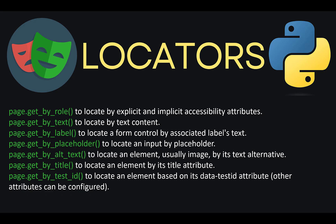Get by role means we can locate the element by its explicit or implicit accessibility attribute — for example, a button. Get by text means we can locate that element by its text content. Get by label means we can locate a form control by its associated label text. Get by placeholder locates an element using a placeholder attribute. Get by alternate text locates images by their alt text. Get by title locates an element by its title attribute. Finally, get by test ID locates an element based on its data-test-id attribute, which needs to be configured by developers.